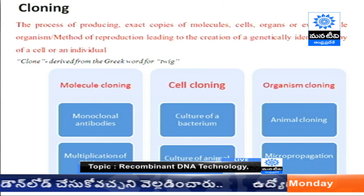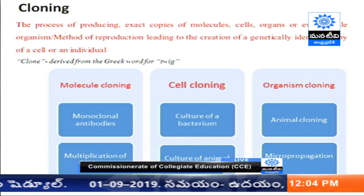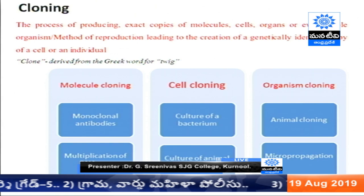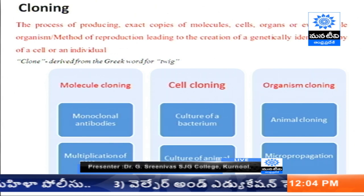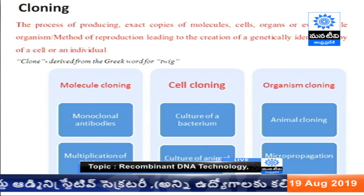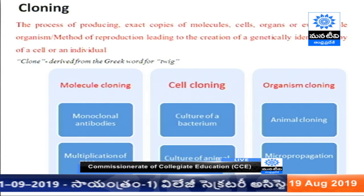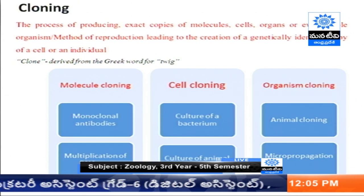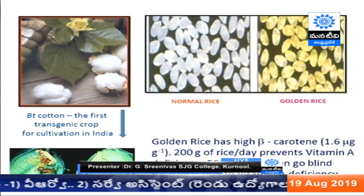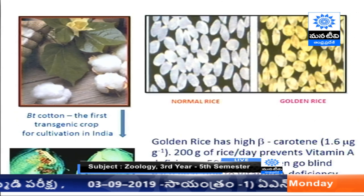Cloning is a process of producing multiple copies of a similar type. The word clone is derived from the word 'twig.' In molecular biology, cloning is used in different fields: molecular cloning for monoclonal antibodies and DNA multiplication; cell cloning for culturing bacteria and animal cells including stem cells; and organism cloning for animal cloning and micro-propagation. This technique is used in animals, plants, prokaryotes, and eukaryotes.